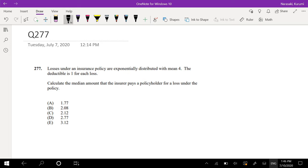Assuming that you're at it today, let's just dive right in. Losses under an insurance policy are exponentially distributed with mean 4. The deductible is $1 for each loss. Calculate the median amount that the insurance pays a policy holder for a loss under the policy.